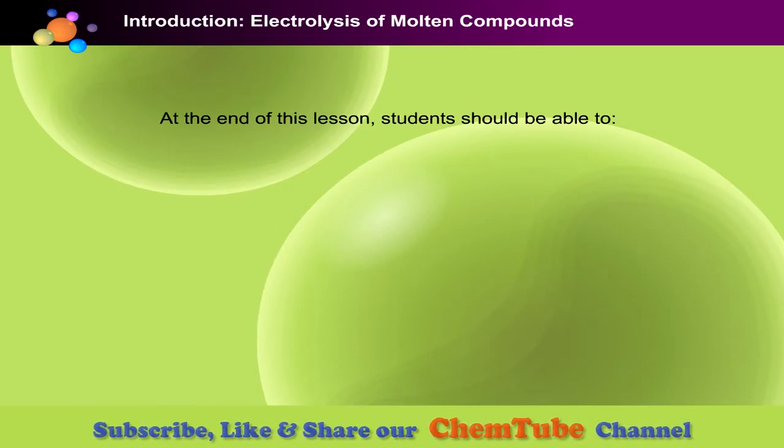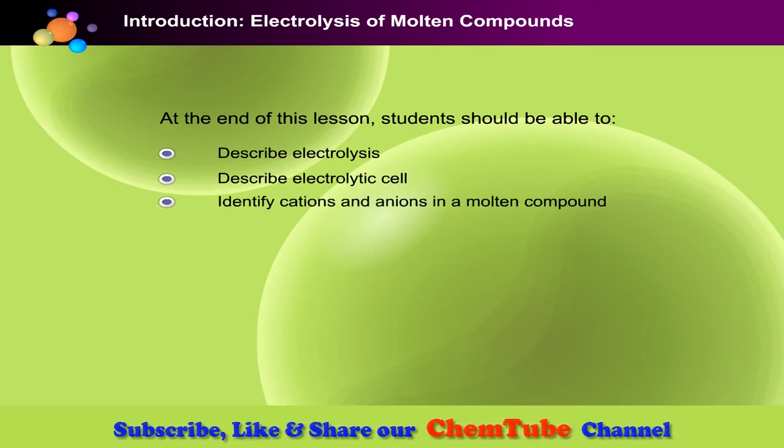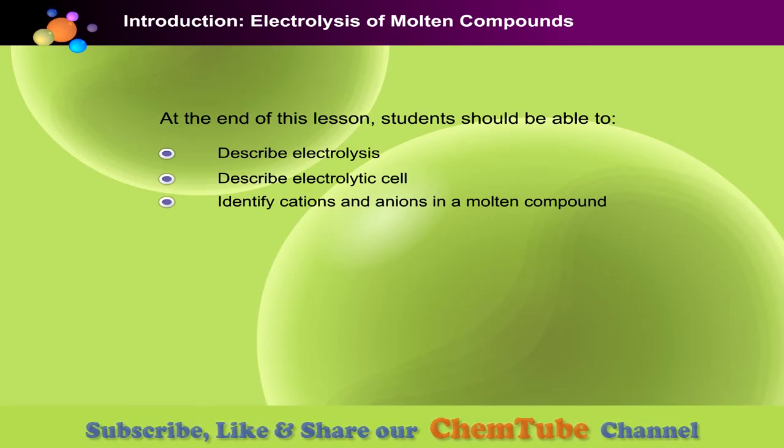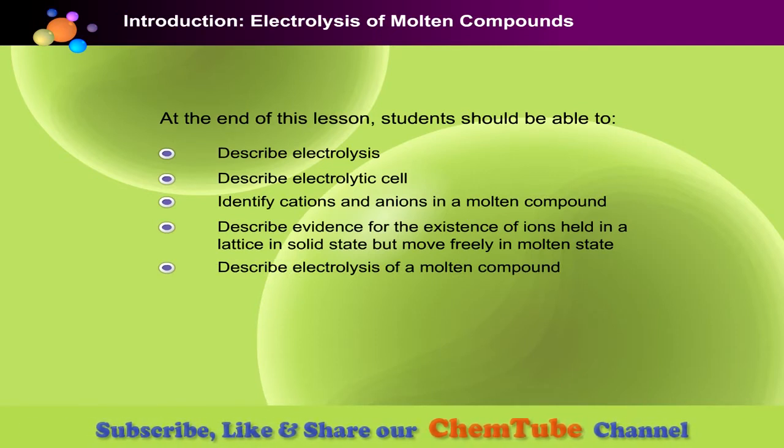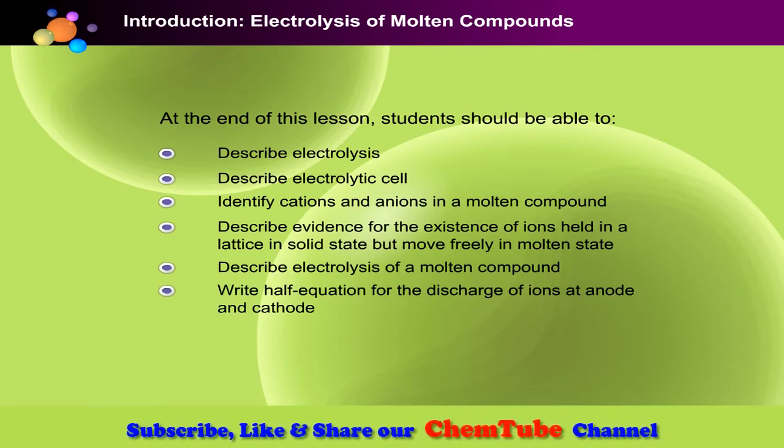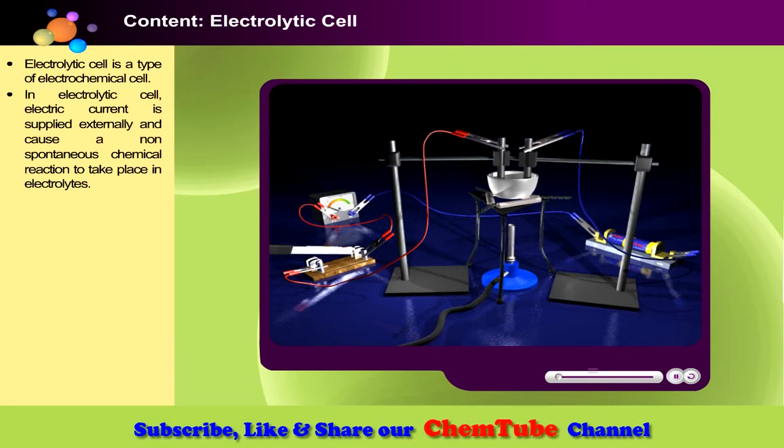By the end of this lesson students should be able to describe electrolysis and electrolytic cell, identify cations and anions in a molten compound, describe evidence for the existence of ions held in a lattice in solid state but move freely in molten state, describe electrolysis of a molten compound, write half equation for the discharge of ions at anode and cathode, and predict product of the electrolysis of molten compounds.